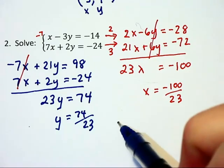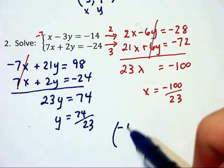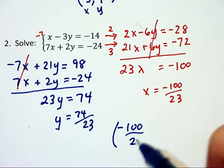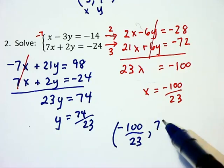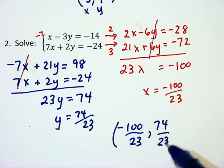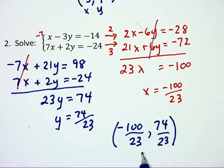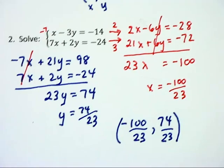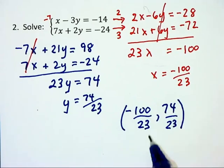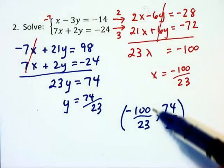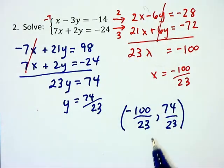Well that happens to be the right value and we have negative 100 over 23 comma 74 over 23 as the point of intersection of those two lines. Now you can check this in each equation. I'm not going to do that for you. But you could and verify that this works. Notice this problem would not be easily solved using the graphing method. You do need an algebraic approach to arrive at such an ugly answer.